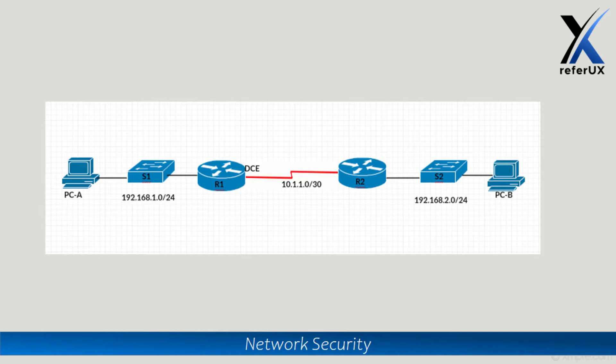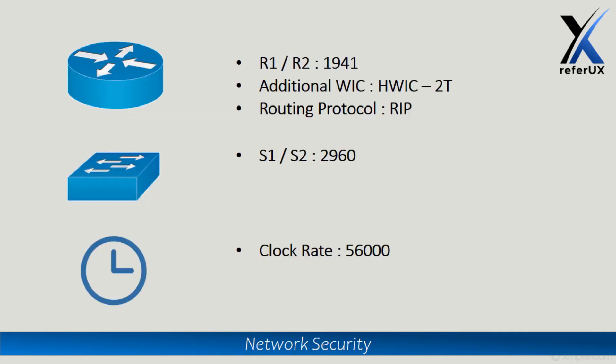There will also be two Cisco switches and two PCs. Some points to remember: we will be using the Cisco 1941 module for both R1 and R2. The respective hostnames of the two routers would be R1 and R2. For each router, we will be adding an additional WAN interface card for serial interfaces. We will use the High-Speed WAN Interface Card 2T, which includes two serial interfaces — you can find it as HWIC-2T. The routing protocol we will deploy is RIP.